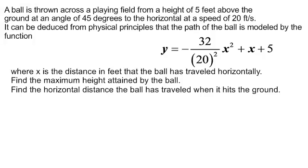It can be deduced from physical principles that the path of the ball is modeled by the function - look, a function in everyday life. The function is y equals negative 32 over 20 squared times x squared plus x plus 5, where x is the distance in feet that the ball has traveled horizontally.